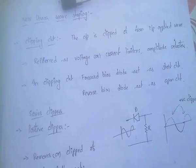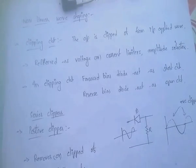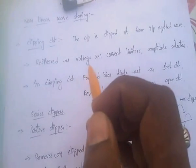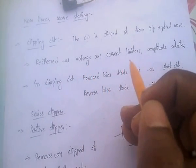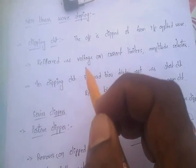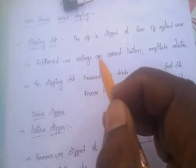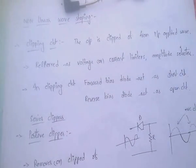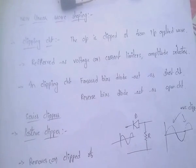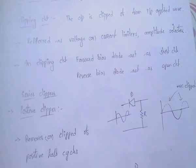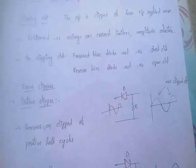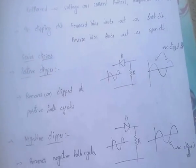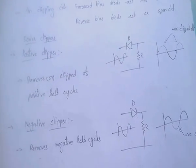An important point: the clipping circuit is also referred to as voltage or current limiters, or amplitude selectors. In a clipping circuit, the forward-biased diode acts as a short circuit and the reverse-biased diode acts as an open circuit.